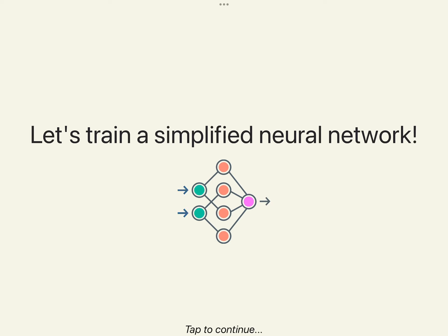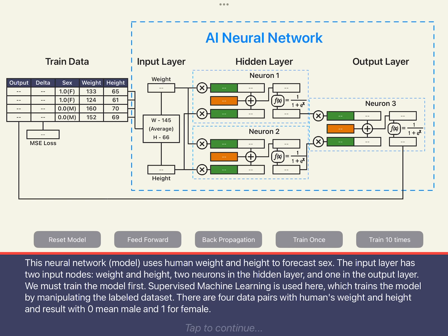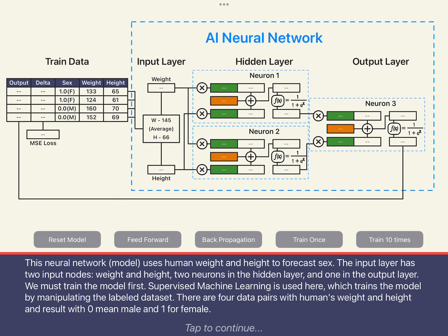Below, we demonstrate how to train the most straightforward neural network. This neural network uses a person's height and weight to predict gender. The input layer has two nodes: height and weight. There is only one hidden layer with two neurons, and the output layer has one neuron. We use supervised machine learning methods to train this network.